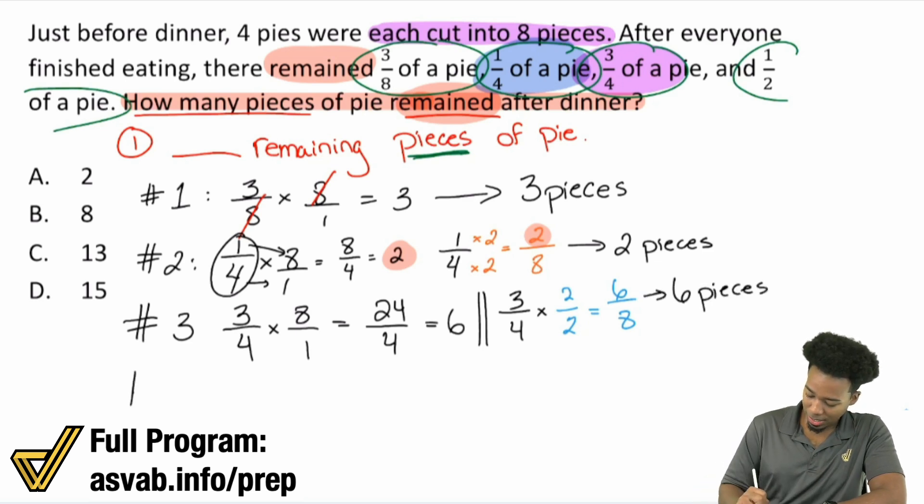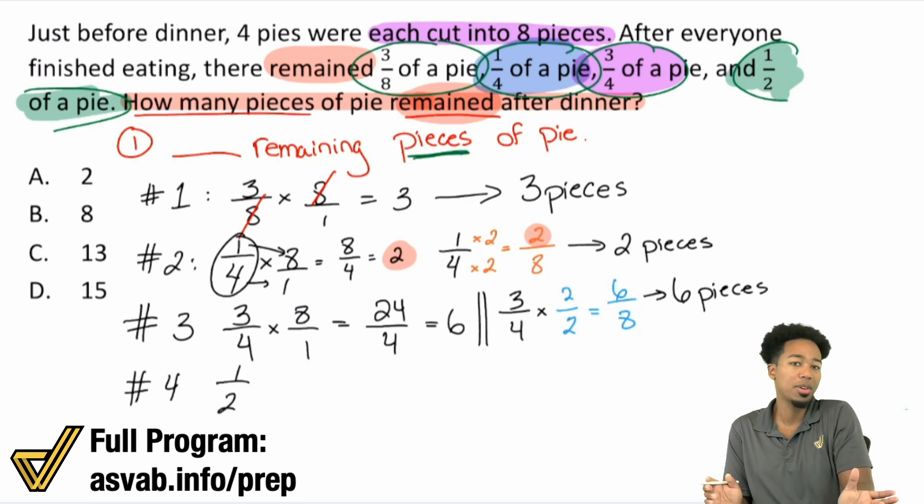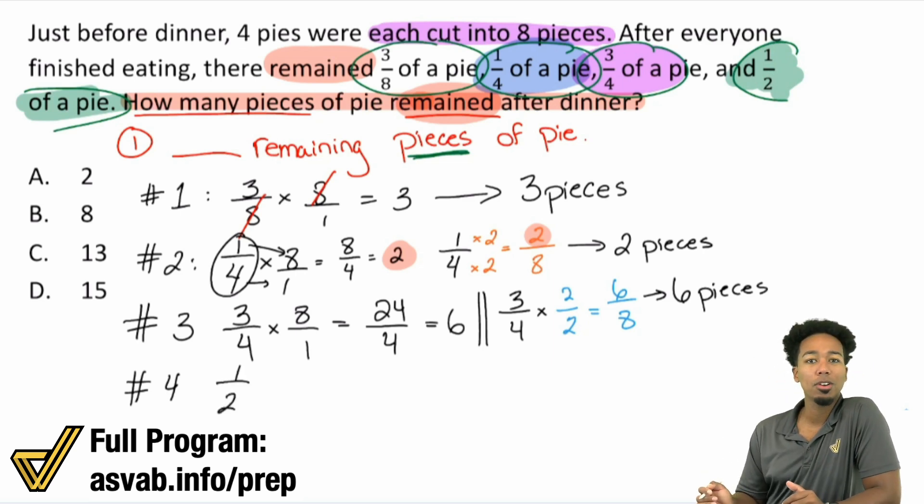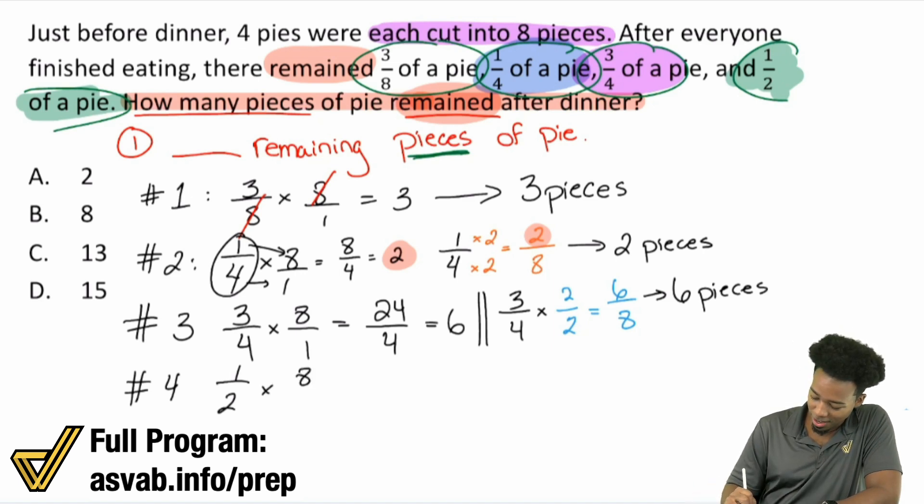And then lastly, pie number 4. I'll go ahead and use green here. We have half of a pie. So if we have one half, if you know your mental math, you're pretty good already. But if we want to know what half of 8 is, that's 4. So we can just do half of 8. And that's going to give us 8 over 2. And that will be 4 pieces.